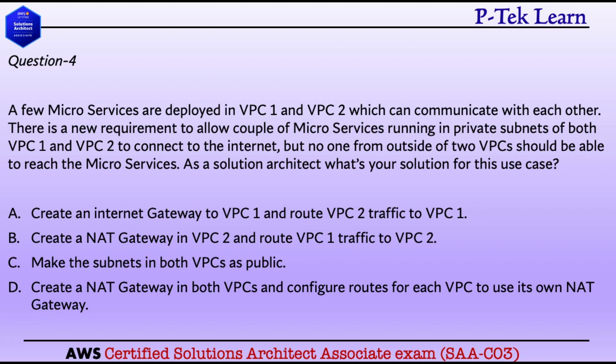Question number 4. A few microservices are deployed in VPC 1 and VPC 2 and are able to communicate with each other. There is a new requirement to allow microservices running in private subnets of both VPCs to connect to the internet, but no one from outside these two VPCs should be able to reach the microservices. The microservices should be secured from external access.